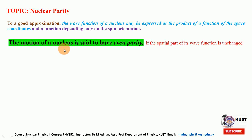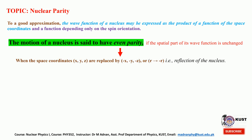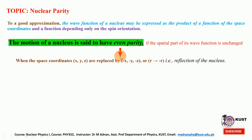The motion of the nucleus is said to have even parity if the spatial part of its wave function is unchanged when the spatial coordinates x, y, z are replaced by minus x, minus y, and minus z — or in other words, we replace r by minus r, that is a reflection of the nucleus. So if the space coordinates are changed and the wave function is unchanged, then the motion of the nucleus is said to have even parity.